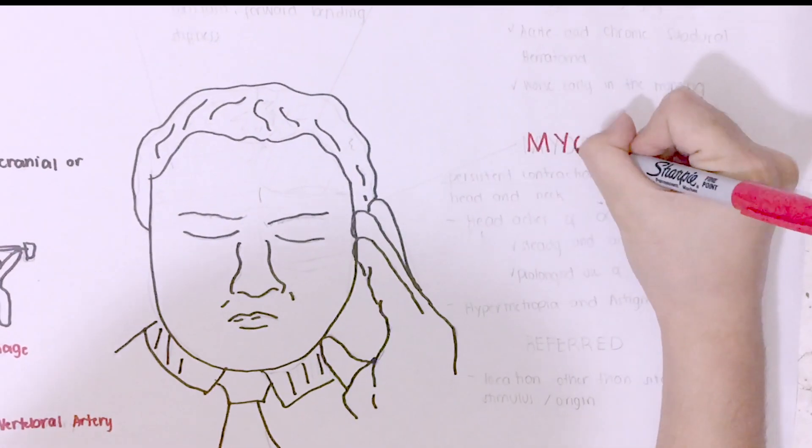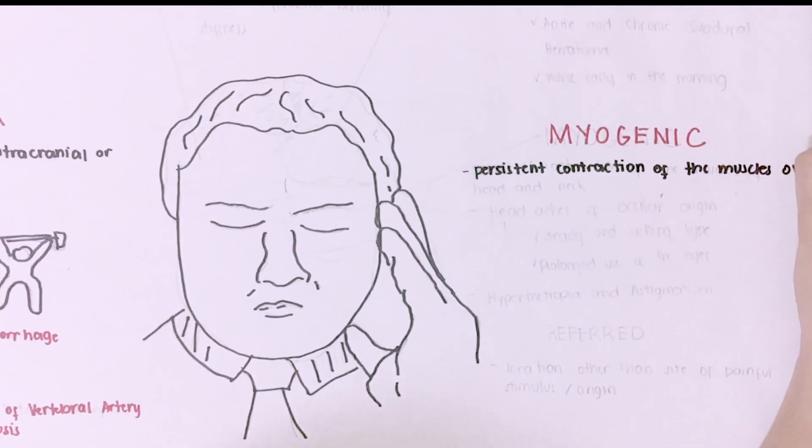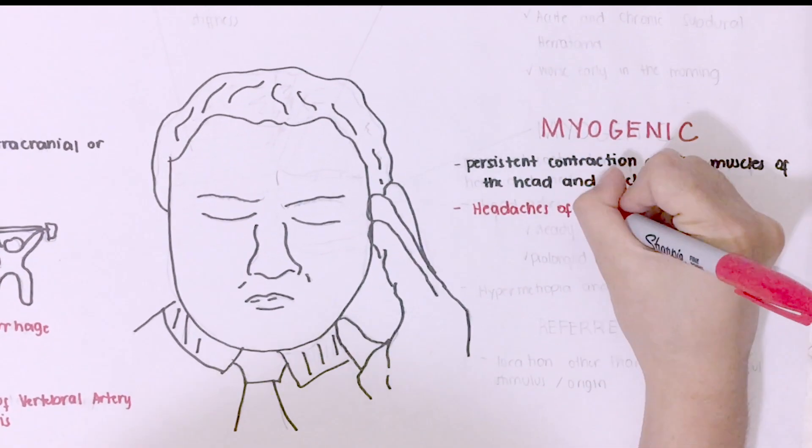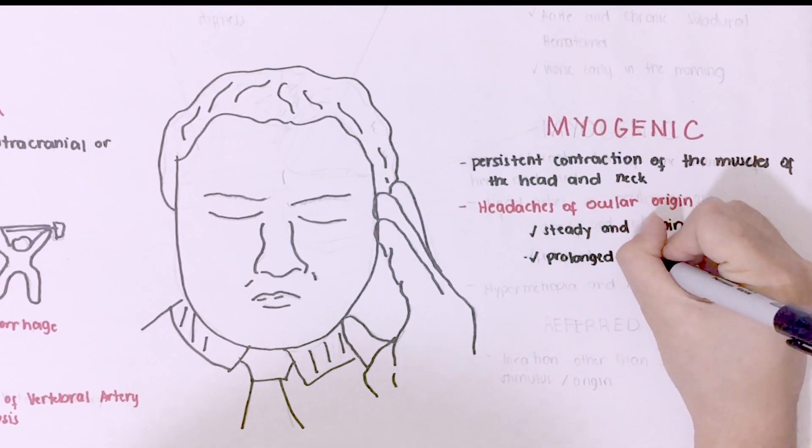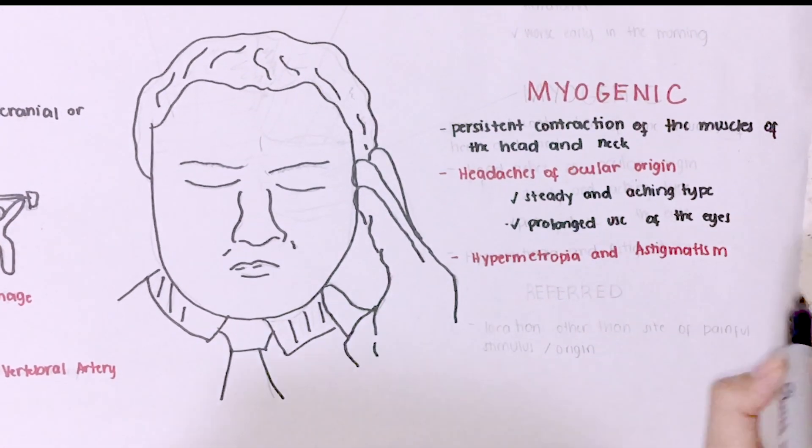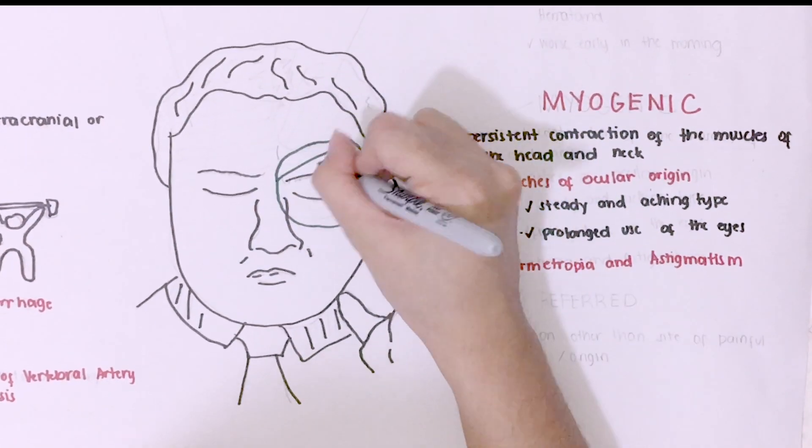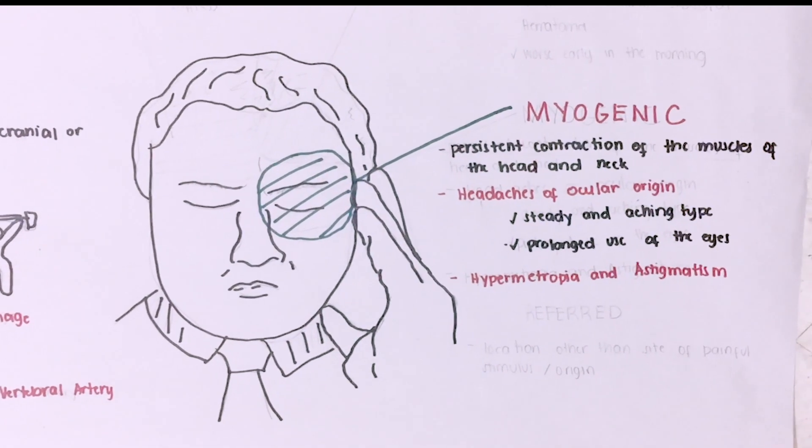Myogenic. This is due to persistent contraction of the muscles of the head and neck. Examples are headaches of ocular origin. They are steady and aching tight. They are due to prolonged use of the eyes. Examples are hypermetropia and astigmatism, wherein there is sustained contraction of extraocular, frontal, temporal, and even occipital muscles.